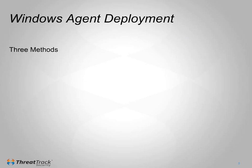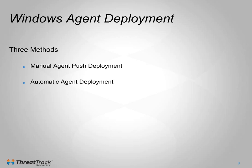There are three methods for deploying the Viper Agent on a Windows PC. The first is to push the Agent manually from the Viper console. The second is to configure Viper to scan certain network ranges for unprotected PCs and deploy the Agent automatically. And the third is to create an installation package that can be taken to the PC and installed. Each method has its own benefits.